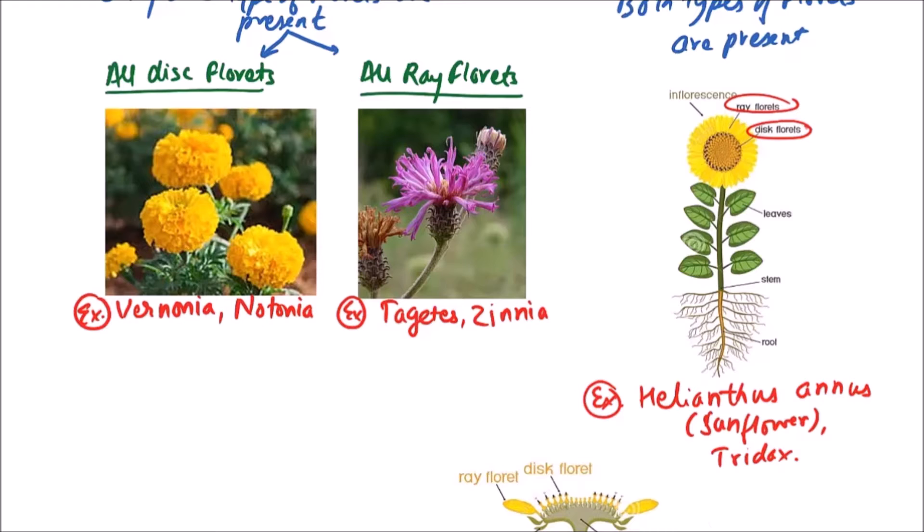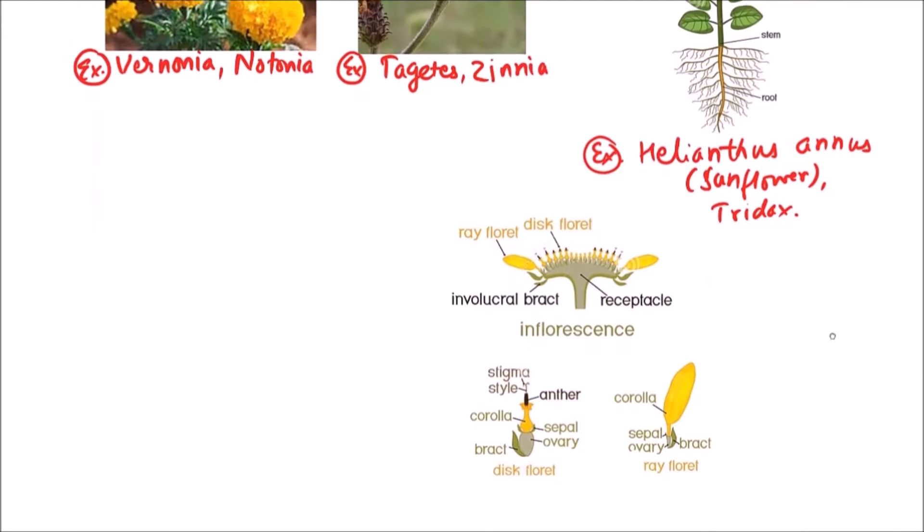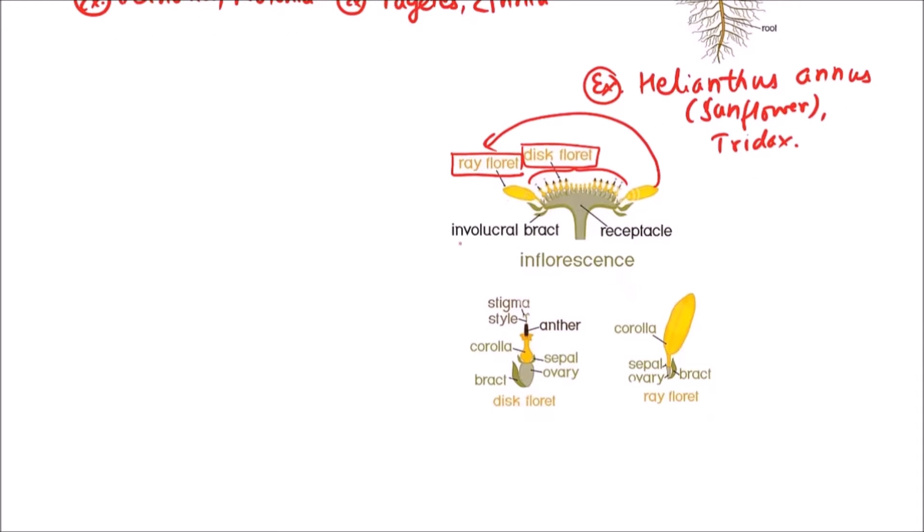So sunflower is not a flower but an inflorescence. When the section of sunflower is taken, the ray florets can be easily observed on the periphery and the disc florets in the center. Here all are sessile and on the surface of receptacle. These are surrounded by involucral bracts or involucre.